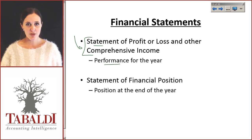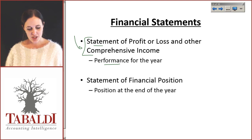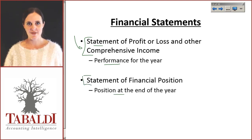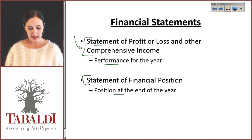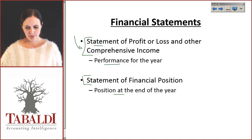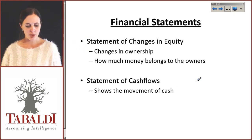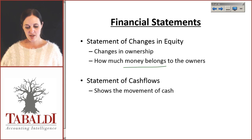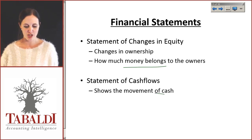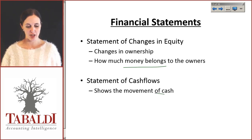This discusses the performance for the year — we'll get into detail later. Your statement of financial position is the position that you have at the end of the year. So the performance throughout the whole year and the position that you have at the end of the year. We also have the statement of changes in equity, which indicates the changes in ownership and how much money belongs to the owners themselves. We'll get into detail later. And the statement of cash flows shows the movement of cash within the business.